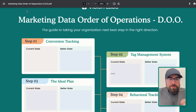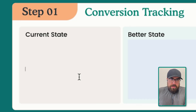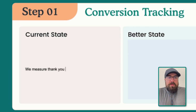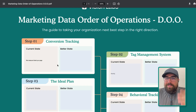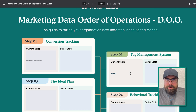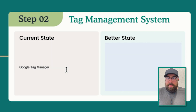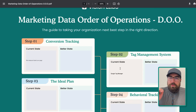Here is what the fillable version looks like. I want you to come in here and write down the currency — how do you get conversion tracking set up? For example, we measure thank you pages. What does the better state look like? You can level up infinitely. Then we have tag management — are we using Google Tag Manager? Google Tag Manager server side? Are we using something like Segment? Are we using another system like PWIC Pro? It does not matter what you use, but are you using some sort of system to operationalize where you're tagging from?